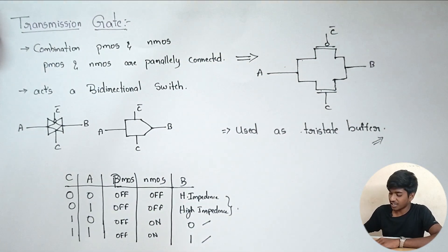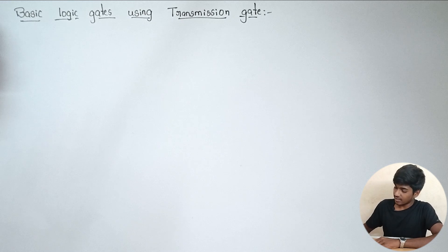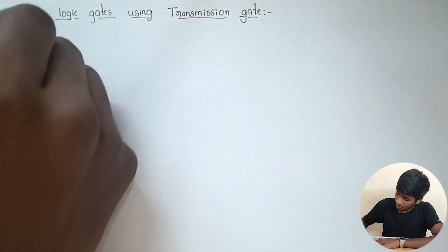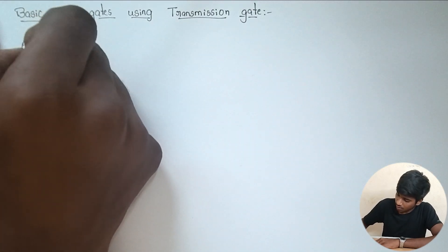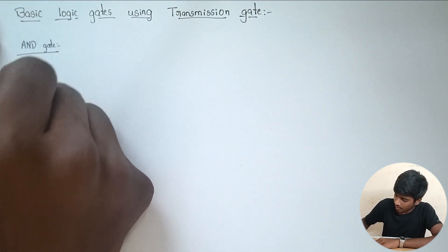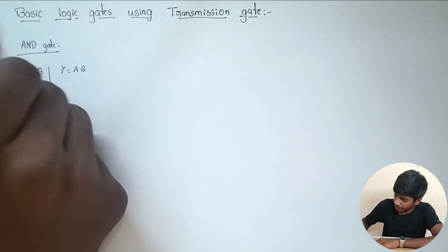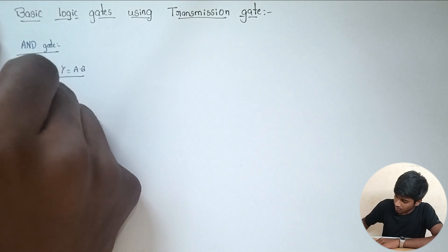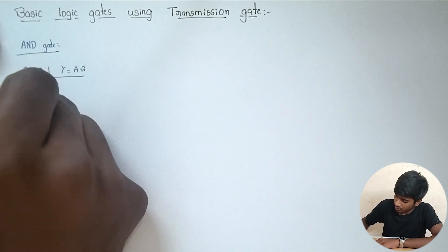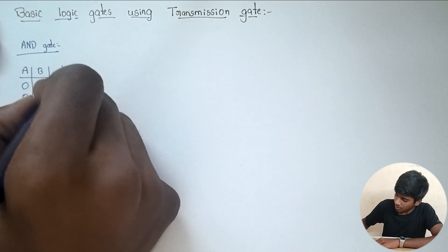This is an introduction about transmission gate. Now we look at how transmission gate is used to implement logic gates. First, the truth table for a 2-input AND gate: Y equals AB. Inputs 0,0 give 0; 0,1 give 0; 1,0 give 1; 1,1 give 1.